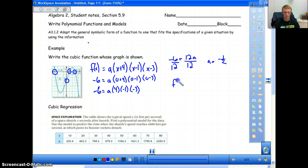So then we just rewrite our function. a is now equal to negative 1 half, so we have negative 1 half times the quantities x plus 4, x minus 1, and x minus 3. And that's our equation. That's it.